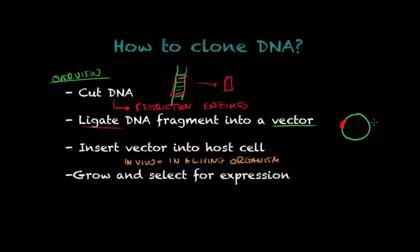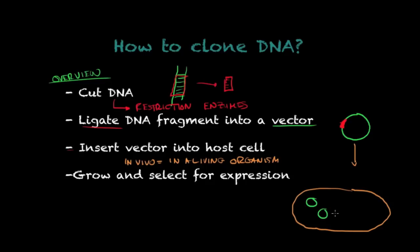Because in this step you take the vector and introduce it into a living cell, the vector will find the right conditions to replicate. When it does so, it creates more copies — or clones — of my DNA fragment, the one we cut and selected from the big DNA molecule at the beginning. This is what I mean by growing.